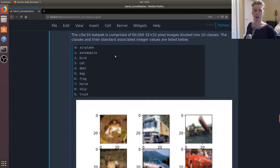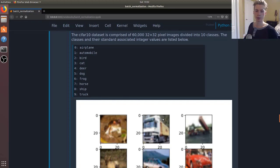They're divided into 10 classes: airplanes, automobiles, birds, cats, deer, dogs, frogs, horses, ships, and trucks.